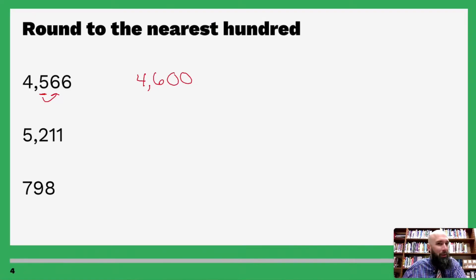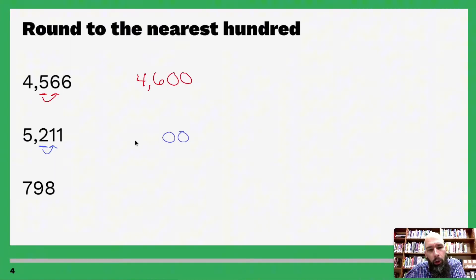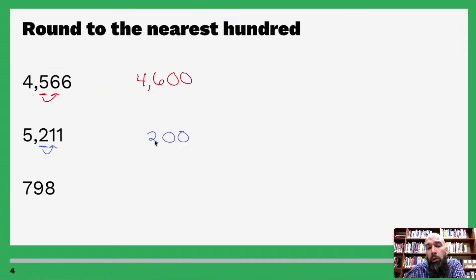Round to the nearest hundred. Here's my hundreds — ones, tens, hundred. Five or above? Nope — four or below, let it go. So we're going to make these ones zeros, and leave that two as a two because this is four or below. You become two, you stay two, and five comes along for the ride.